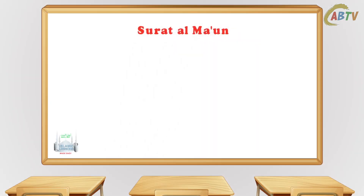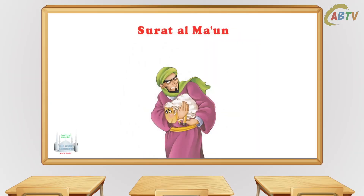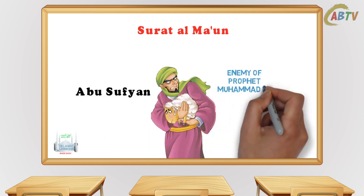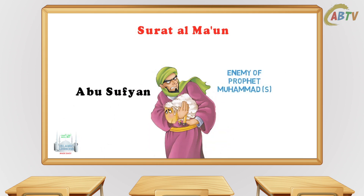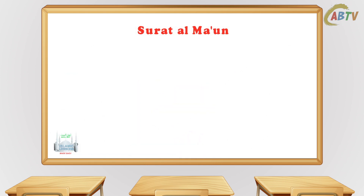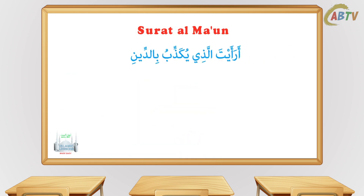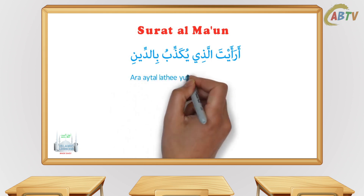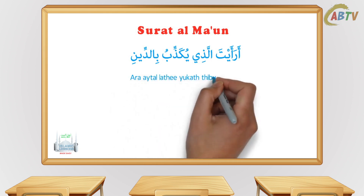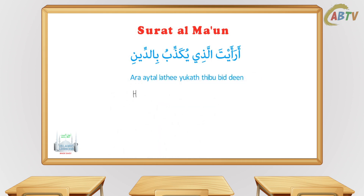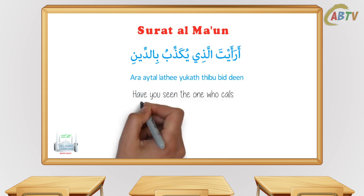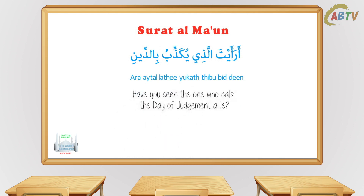Surah Al-Ma'oon. Some say that this Surah was revealed about a person called Abu Sufyan, who was one of the biggest enemies of the Prophet Muhammad at his time. Surah Al-Ma'oon starts off with Bismillahir Rahmanir Raheem. 'Ara'ayta allatheee yukadhdhibu bid-deen?' — Have you seen the one who calls the Judgment Day a lie?